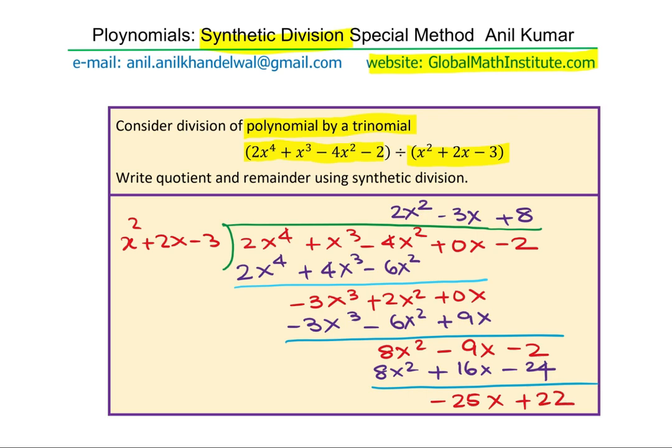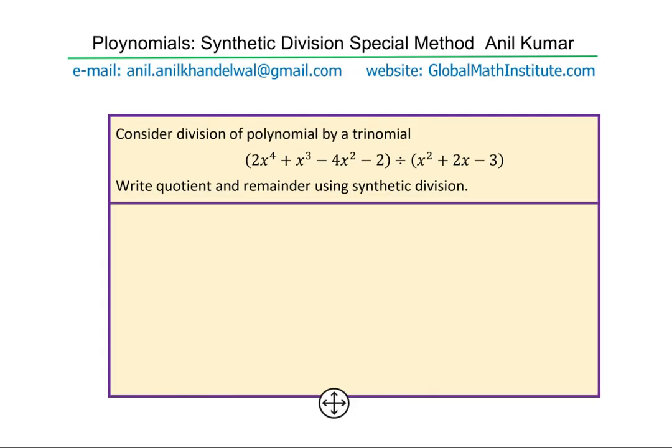And now, again, let us take the difference. What do we get? We get minus 25x and that gives you plus 22. Now, that is the remainder. So, you have the quotient, 2x square minus 3x plus 8, and this is the remainder, minus 25x plus 22. With long division, this is a simple process. Now, how do you get the same result using synthetic division? That is the major objective.